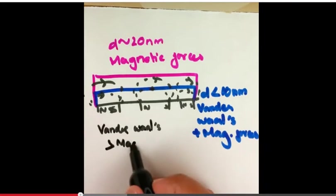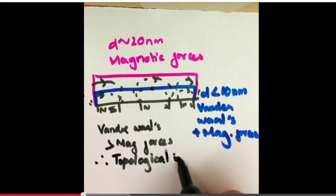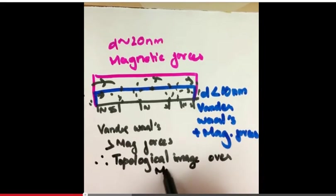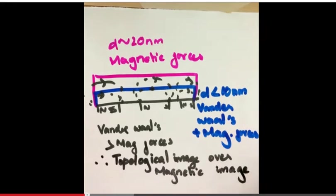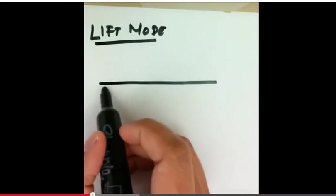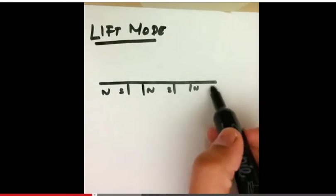Since the Van der Waals forces are much higher than the magnetic forces at a distance less than 10 nanometers, the image consists of topological information as well as magnetic information. Thus, it is common to obtain an image from an MFM in the lift mode.